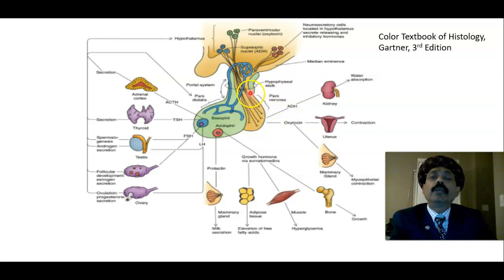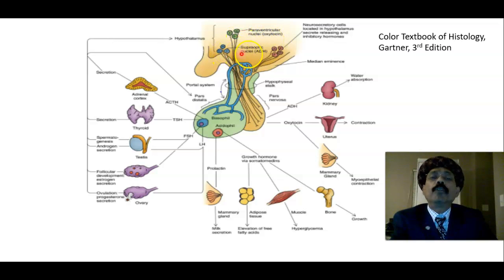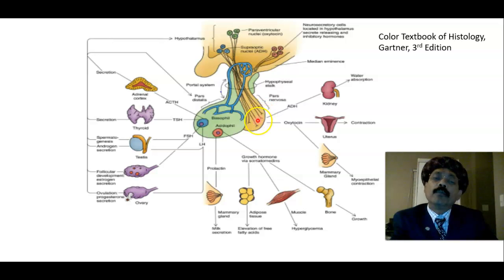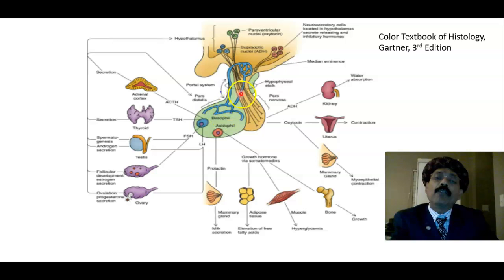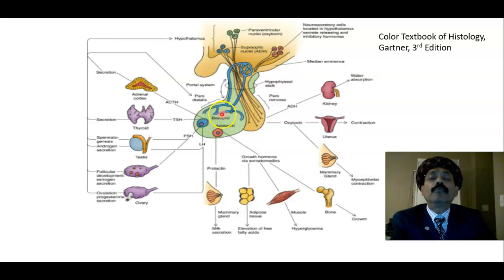In the posterior pituitary we see axons here. The hormones are produced by the hypothalamus — specifically by the supraoptic nucleus and paraventricular nucleus. The paraventricular nucleus produces oxytocin; the supraoptic nucleus produces anti-diuretic hormone. Along the axons, these hormones travel to the posterior pituitary and are stored in the neurosecretory bodies, called Herring bodies, from where they are released into the capillaries and sinusoids. This is an endocrine gland with no duct; it has fenestrated capillaries and sinusoids so hormones go directly into the blood.